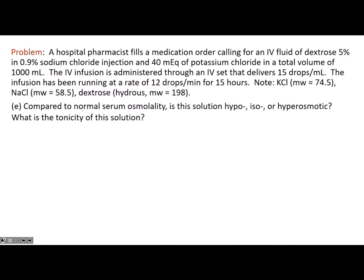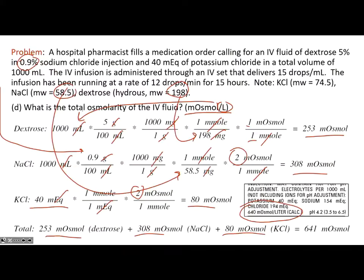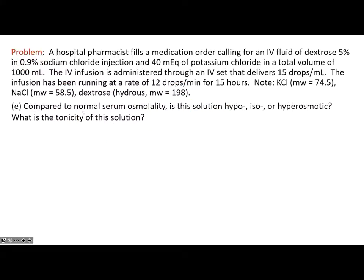The 641 milliosmoles is a solution you're putting into the blood. We discussed isotonicity earlier — you'd generally like to make products isotonic so they're compatible with biologic fluids in terms of osmotic pressures. You can be isotonic, hypotonic, or hypertonic — the same terminology applies to osmoles: you can be hyperosmolar, hypoosmolar, or isoosmolar.